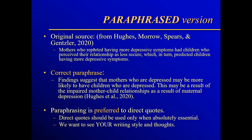Let's go into the paraphrase version. The original says mothers with more depressive symptoms had children who perceived their relationship as less secure, predicting more depressive symptoms in children. A paraphrased version in my own words: 'The findings suggest that mothers who are depressed may be more likely to have children who are depressed. This may be a result of the impaired mother-child relationship as a result of maternal depression.' That's essentially what the sentence said, but in my own words, followed by the correct in-text citation. Paraphrasing is preferred to direct quotes. In most of your writing you can always rephrase something — I want to see your writing style and how you interpret the ideas.